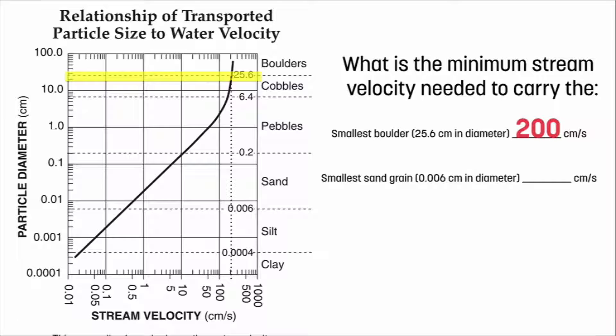You should have calculated 200 centimeters per second as your speed required. Let's move on to the smallest sand grain. So smallest sand grain is 0.006 right there. What's the speed needed? We're looking at the place where the black line crosses the dotted line that I just highlighted, somewhere over here. Now, if you put down 0.3, you'd be correct. If you put down 0.4, you'd be correct. So that's why I put 0.35 centimeters per second.